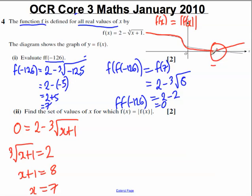This point here is x is equal to 7. Therefore, the original function equals the modulus function for all values of x less than or equal to 7.